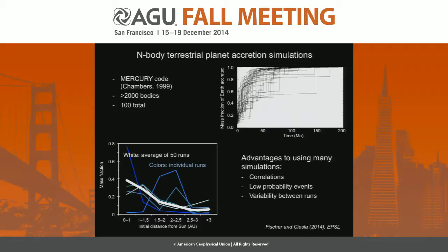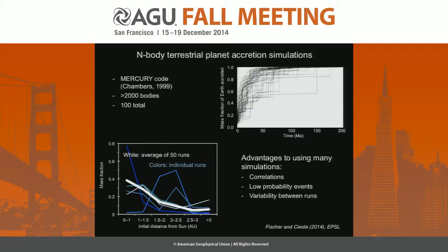There are two main types of information we extract from these simulations for our core formation modeling. The first is the mass evolution of the Earth analog. I'm plotting the mass fraction of the Earth as a function of time for 50 of our 100 simulations, and you can see there's a lot of variability in the way a planet grows and the sizes of impacts it experiences. The other type is the provenance of the Earth's building blocks — the mass fraction of the Earth analog as a function of where that material originated in the solar system. The thick white curve is the average over 50 simulations, and the thin blue lines are individual runs; some closely track the average but some are extremely different.